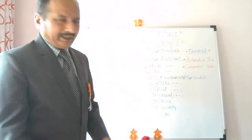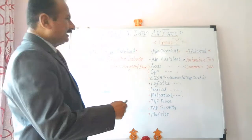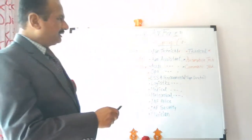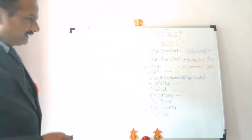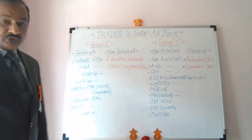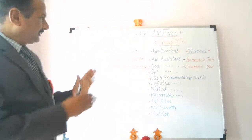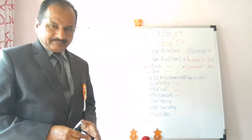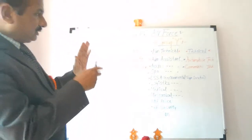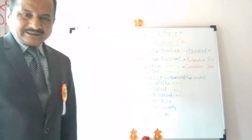There is Group X and Group Y. Under Group X, there are two streams: technical trade and non-technical trade. Similarly, under Group Y, there are also two streams: technical and non-technical.